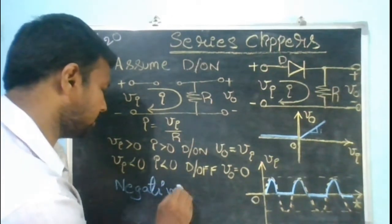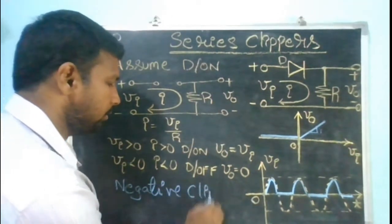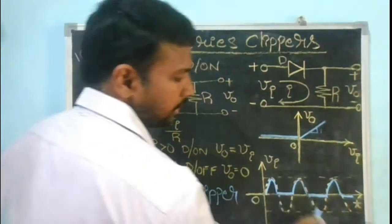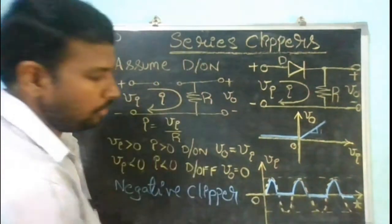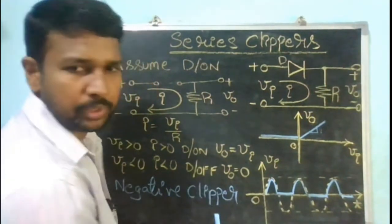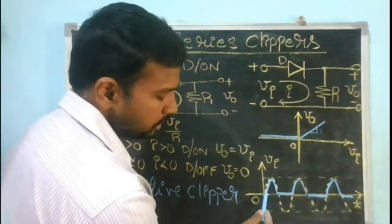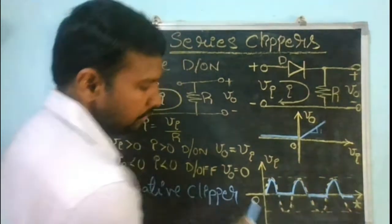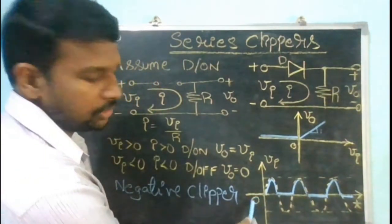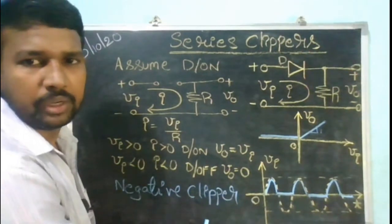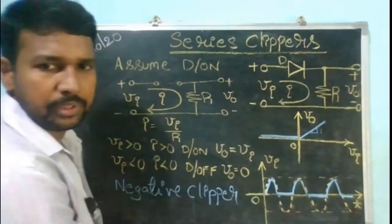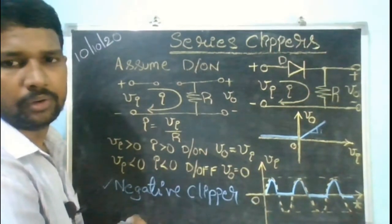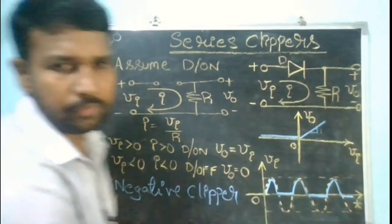It is called a negative clipper because the negative portion has been clipped off. The portion of the input that has been selected is the positive half cycle, which is above the reference level of zero volts in this case. That is why it is called a clipping circuit, and in particular a negative clipper.